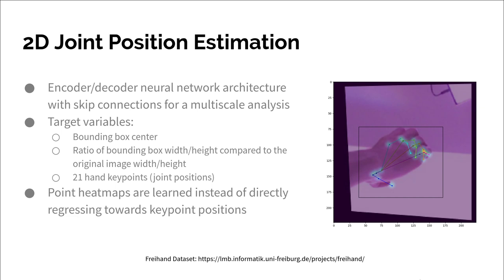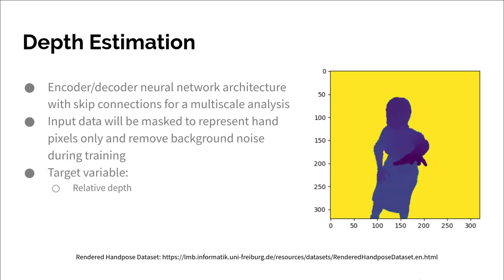Key point heat maps are learned instead of directly regressing to key point positions. This allows for a more general model and prevents overfitting. Depth estimation is accomplished with a similar architecture to 2D key point estimation, done through an encoder-decoder neural network architecture with skip connections for multi-scale analysis. However, input will be masked to represent only hand pixels and remove any background noise during training. This means the target is a relative depth, which represents the range of depths all within the hand region of the image.